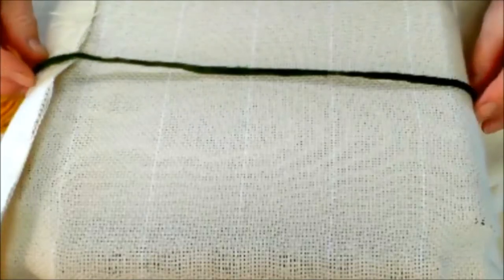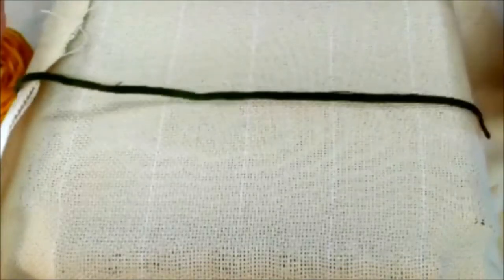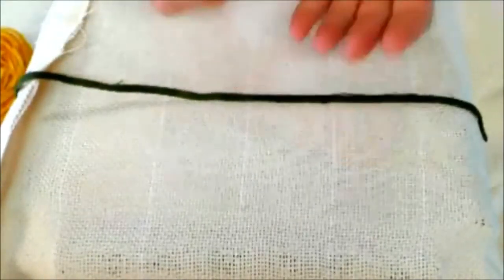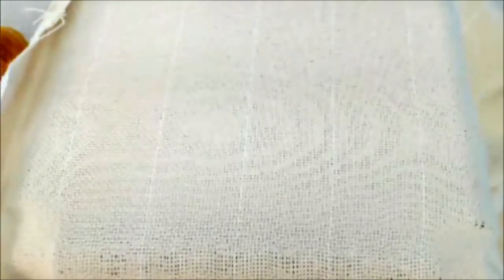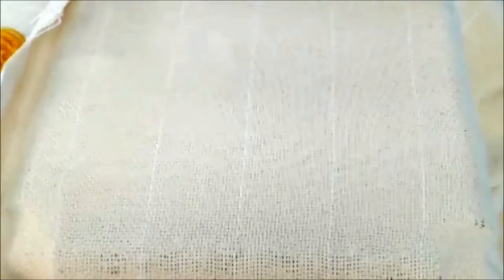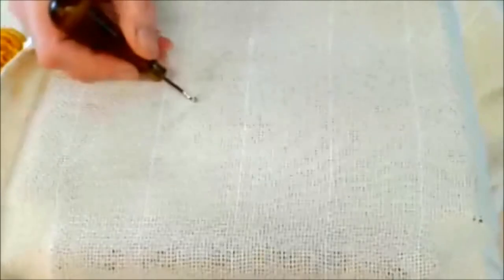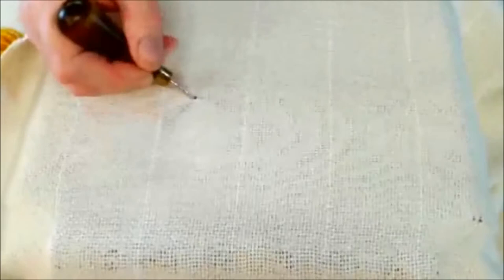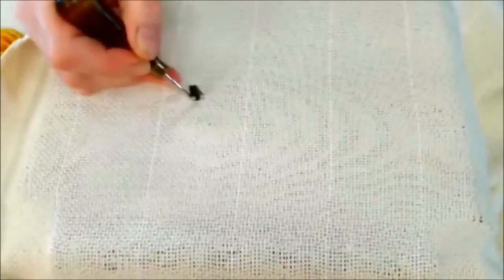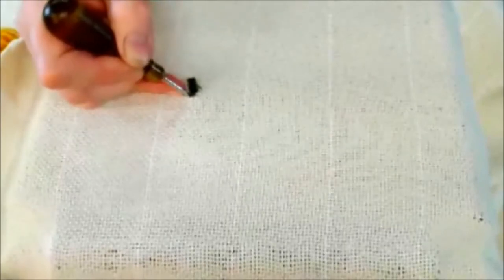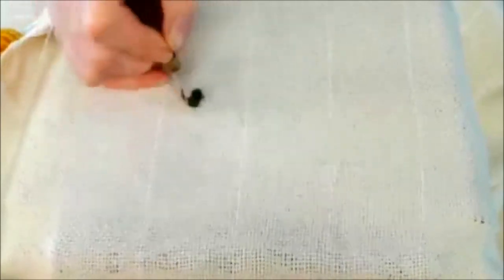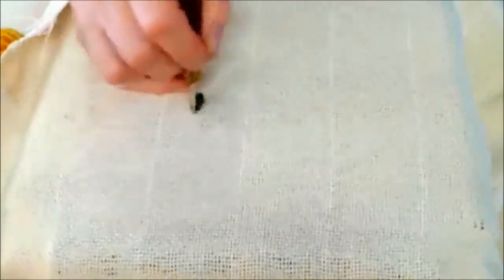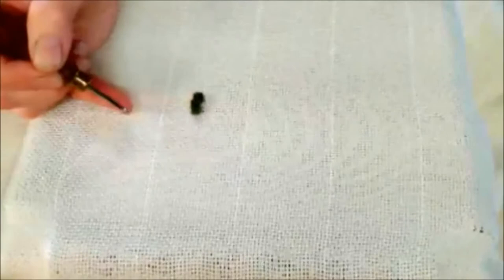Now for the actual hooking, I have my little worm. I have my foundation cloth on a frame. I have my hook. I take my worm and I hold it in my left hand which you can't see because it's underneath the foundation fabric and I have my hook on top. I reach my hook through and I pull up a loop, and I reach it through and I pull up a loop, and I reach it through and I pull up a loop.